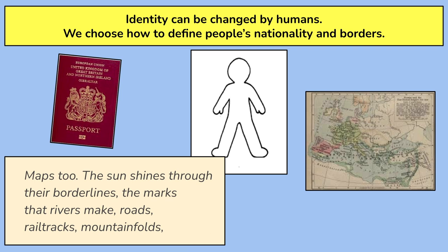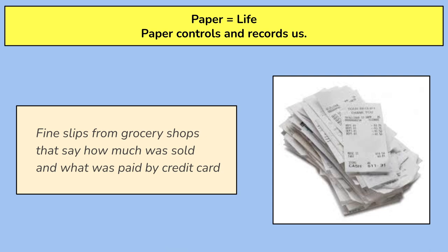Paper equates to life — at least that's the view of this poem. It controls and records us. Think about receipts: they track what you have bought, they track how much you've spent, they log the time and the place that the transaction was made. It is a literal paper trail of where you've been. Likewise, when you walk into a building and you need to sign in, more often than not, you pick up a pen and you write it on a piece of paper. Obviously these days some of that is done electronically, but it's the same kind of principle. Paper is tracking us. We use it to log where we have been, how long we've been there for, the reason for us being there.